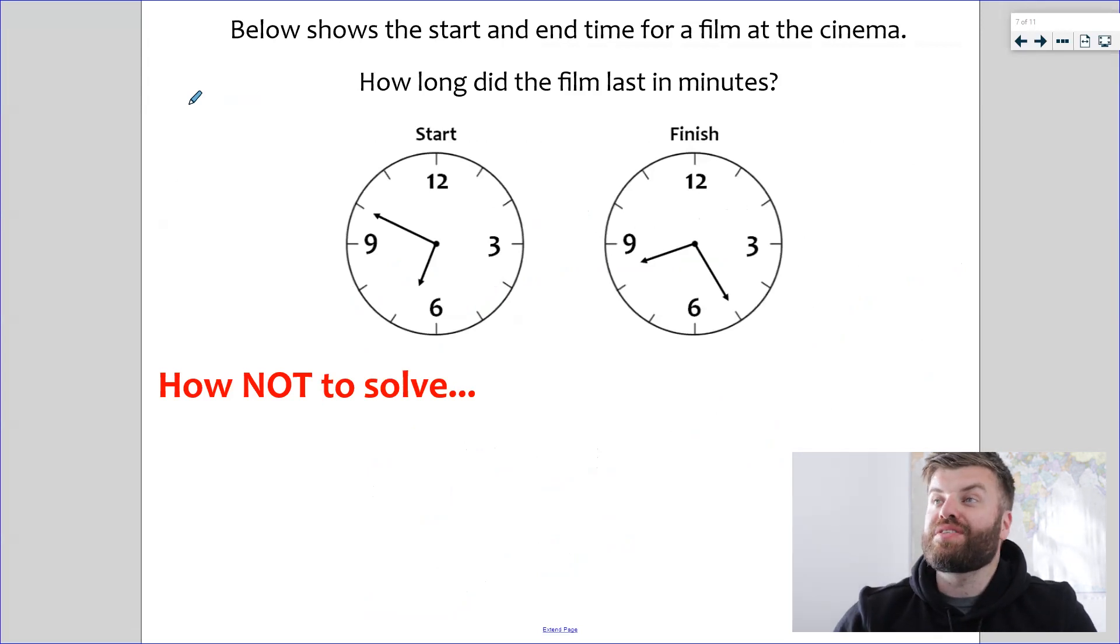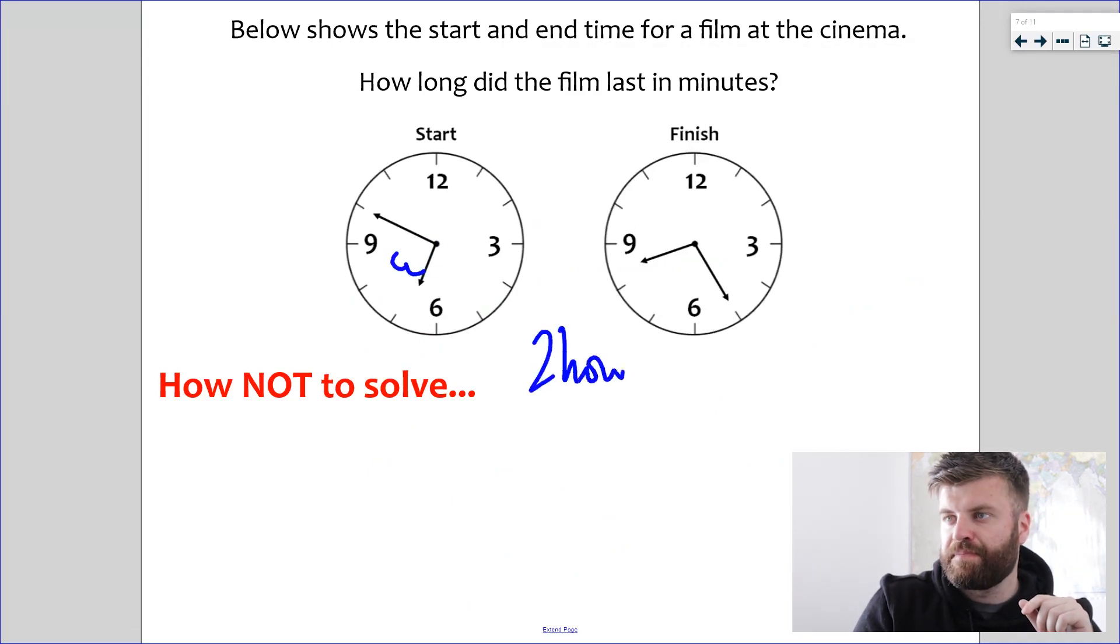Example number two. Below shows the start and end time for a film at the cinema. How long did the film last in minutes? Here's how not to solve. So looking at this, a child might think, okay, I'm going to find the difference between the hour hands and the difference between the minute hands. And we can see here that the hour hand goes one hour, two hours. So, okay, two hours. And the minute hand, well, we're down here over here. So we go around 5, 10, 15, 20, 25, two hours and 25 minutes.